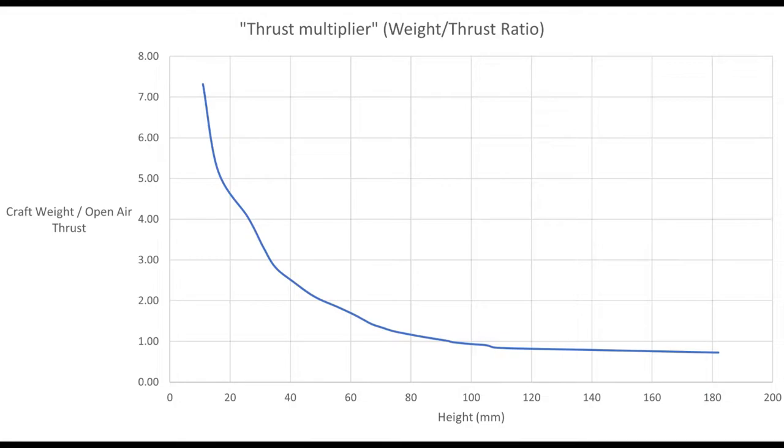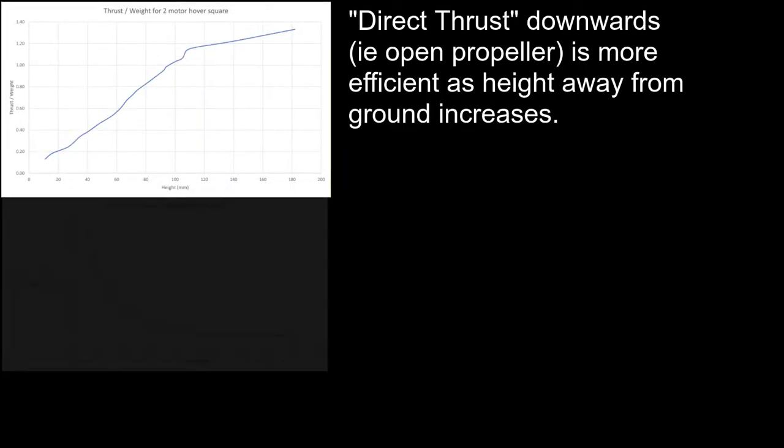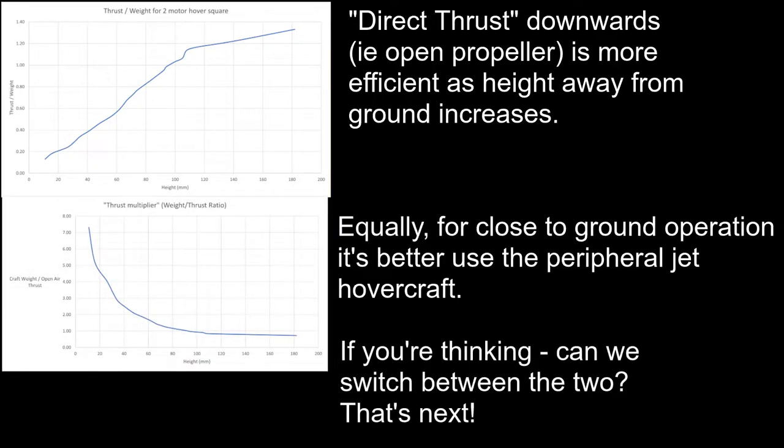It certainly shows just how rapidly it falls away with height. But it doesn't reach 1 until 100 millimeters. And it's only at 120 millimeters, which is about the maximum you're going to get on a battery, that it's producing more thrust than its weight. So at that point, it's definitely less efficient than a multirotor. So the final conclusion is that at some point, it's better to vent thrust directly down rather than trying to run it through the hovercraft with the peripheral jet.